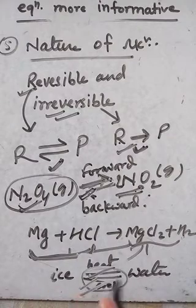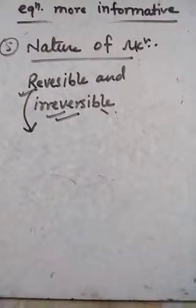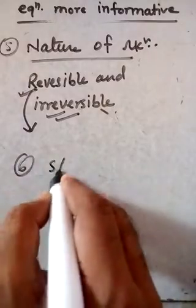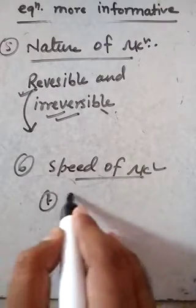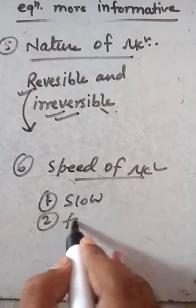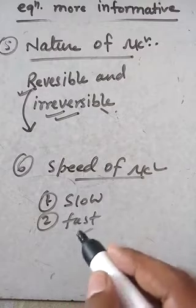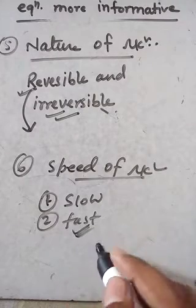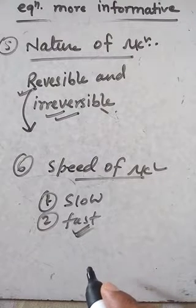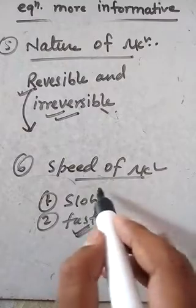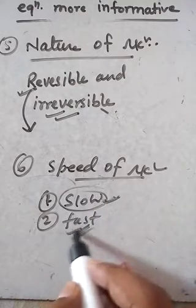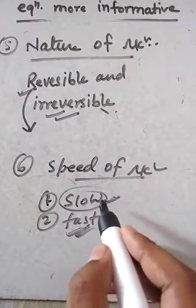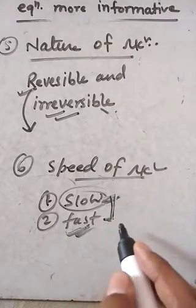The sixth point is the speed of reaction. On the basis of speed, chemical reactions are divided into two types: slow reactions and fast reactions. Reactions between metals and acid, and reactions between acid and base, are fast reactions that take very little time to complete. Slow reactions take more time. Generally, reversible reactions are slow and irreversible reactions are fast. The speed information is written on the arrow.